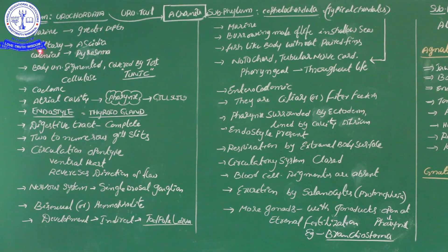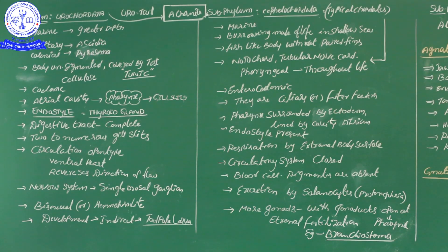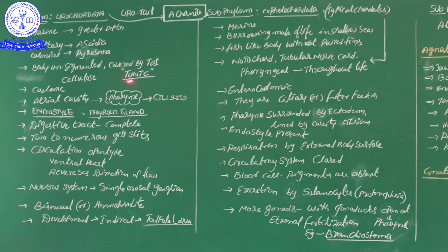Some Urochordata are solitary, attached to the substratum, while others are colonial — a primitive characteristic also seen in some invertebrate phyla. Solitary example: Ascidia. Colonial example: Pyrosoma. The body is unsegmented and covered by a covering called a 'test,' also called a 'tunic.' By the presence of this tunic, Urochordata are also called Tunicates.